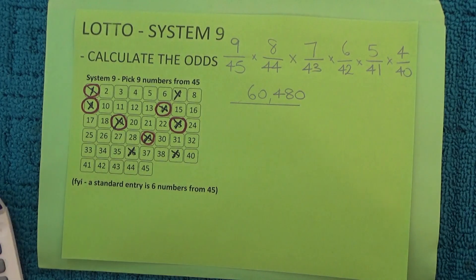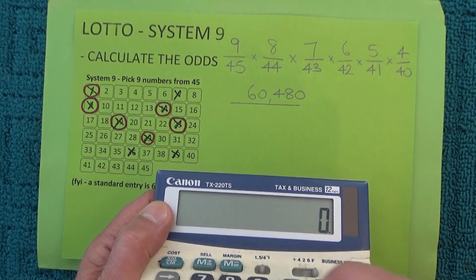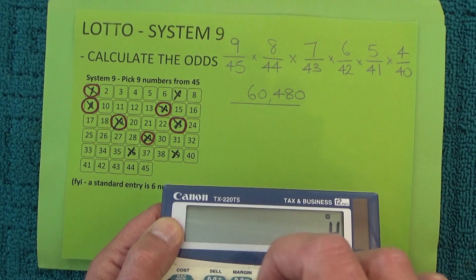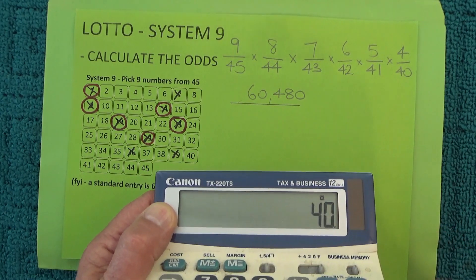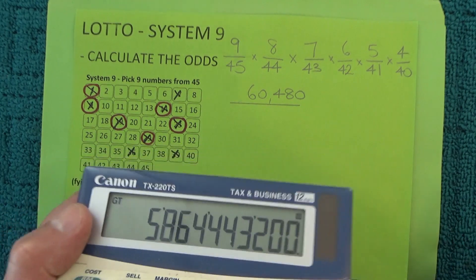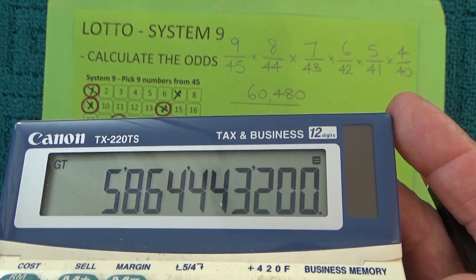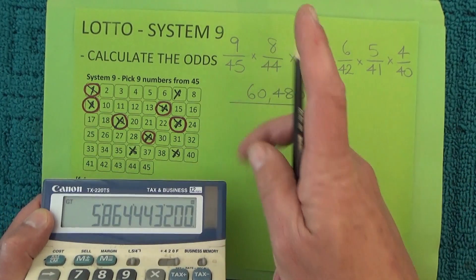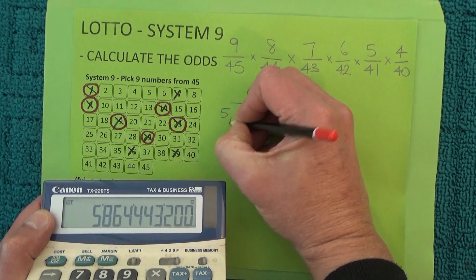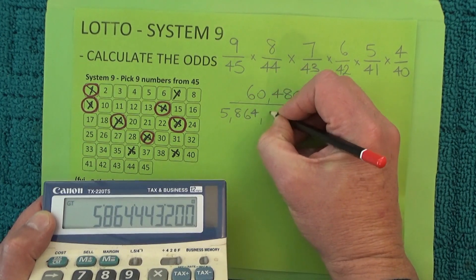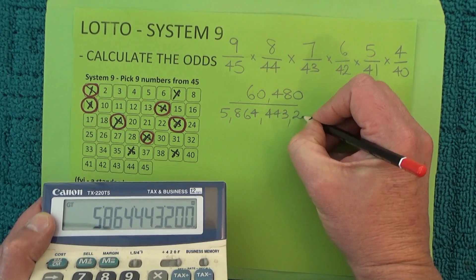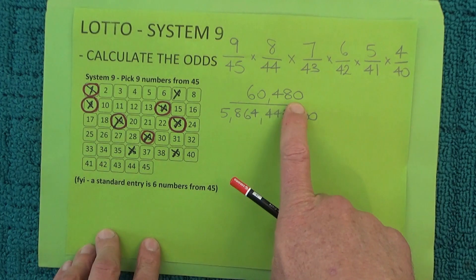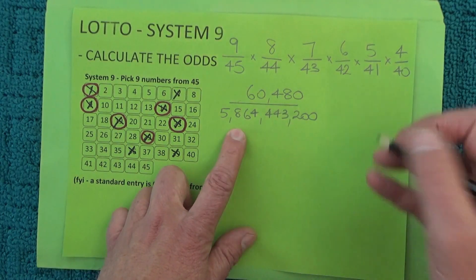Now multiply out the bottom row: 45 × 44 × 43 × 42 × 41 × 40 equals this astronomical number of 5,864,443,200. So the odds are 60,480 chances in 5,864,443,200.